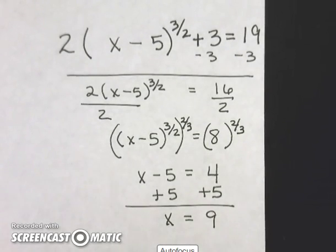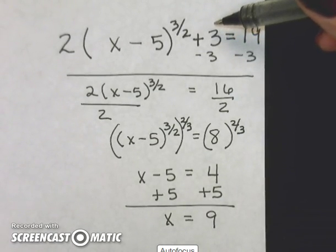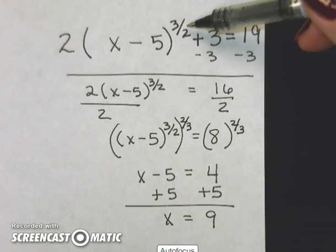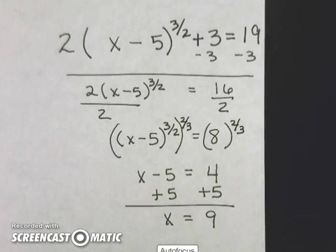This has been four examples of solving equations involving rational exponents. You need to get rid of anything on the outside of the parenthesis, then get rid of the power, and then isolate the variable on the inside of the parenthesis.